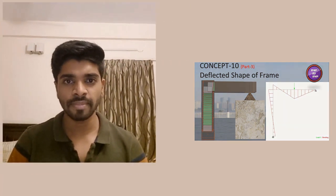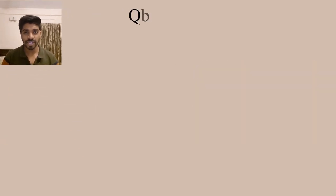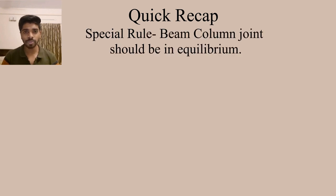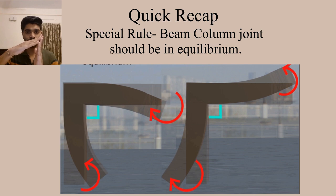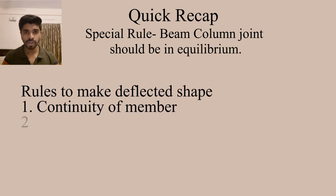Let's have a quick recap to that concept. We have one special rule that at any joint, the joint has to remain in equilibrium. So if we have a beam column joint, that beam column joint either moves inward, both the members will move inward, or both the members will move outward. That depends upon the bending moment diagram of that structure due to the loading conditions.